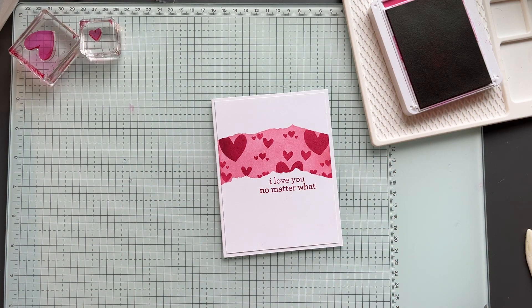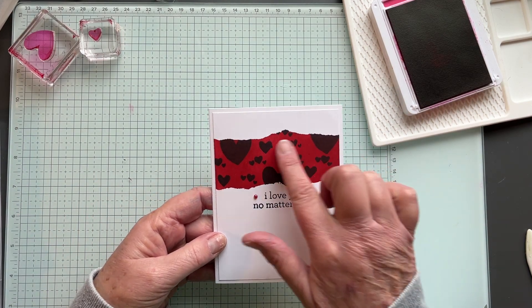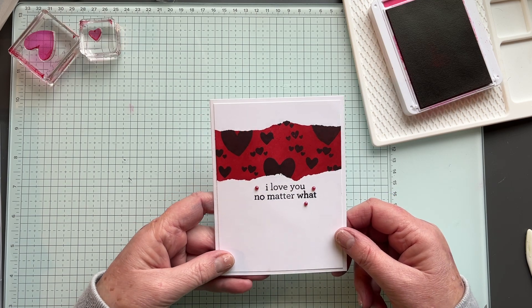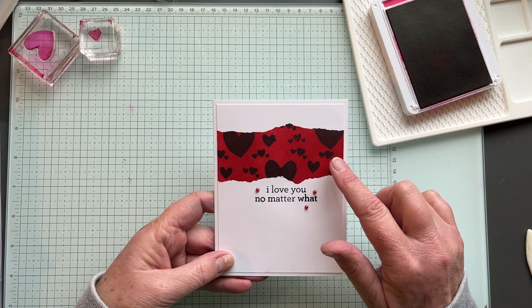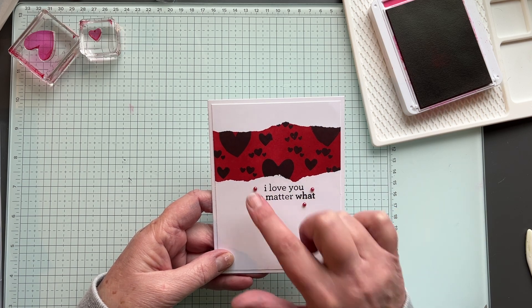Again, it's Bubble Bath and Melon Mambo. The first one I made was real red. And I had intended on doing real red blending and then stamping in real red, but it just didn't show up. So I did tuxedo black memento ink. And then I stamped the sentiment in black as well and added some festive pearls.